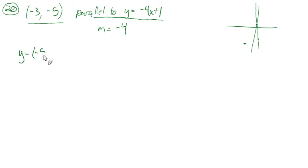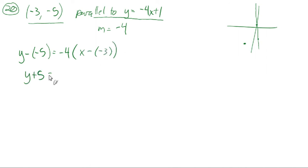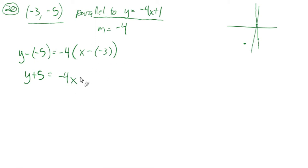So y minus negative 5 equals negative 4 times x minus negative 3, which simplifies to y plus 5 equals negative 4x. Negative 4 times positive 3 is negative 12, and subtracting 5 on both sides gives y equals negative 4x minus 17.